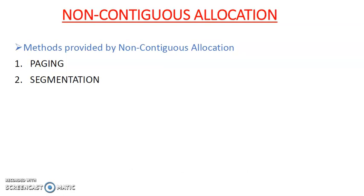The next topic is non-contiguous allocation. Non-contiguous allocation means that in this allocation scheme, the problem of fragmentation arises in contiguous allocation. Non-contiguous allocation provides a better method to solve this problem. The disadvantage of contiguous memory allocation is the problem of fragmentation, so to overcome that, non-contiguous allocation was developed. This allocation provides two methods: paging and segmentation.